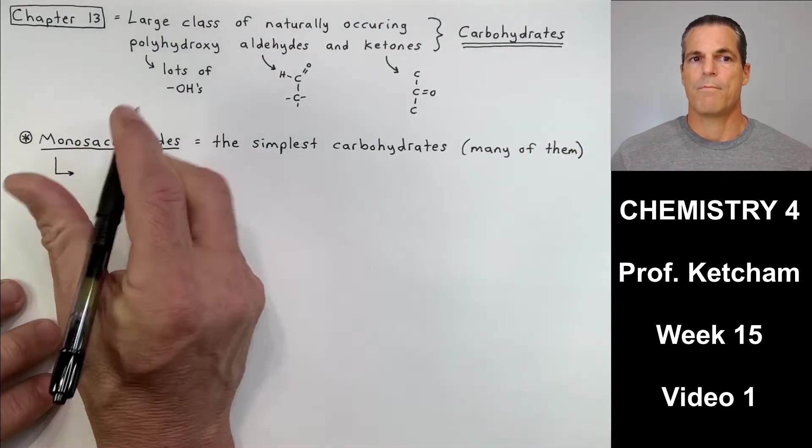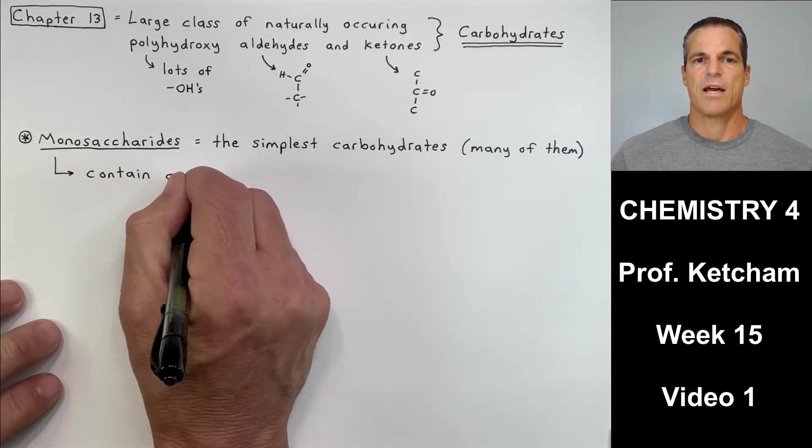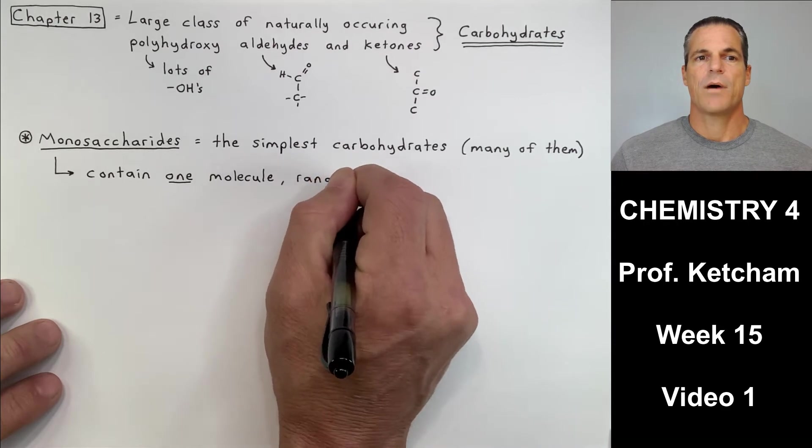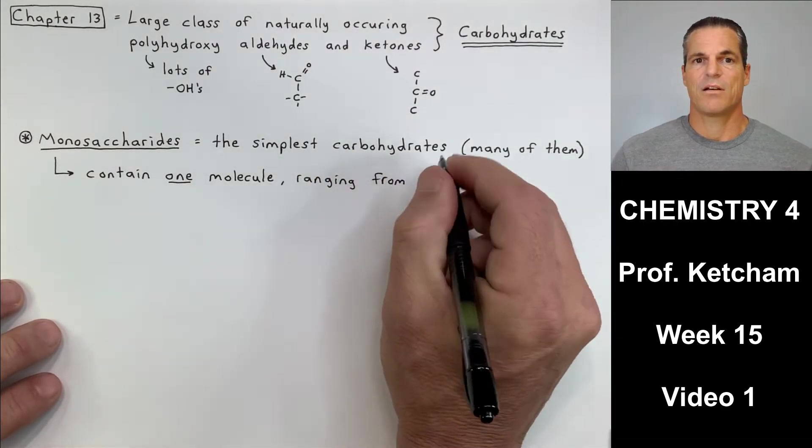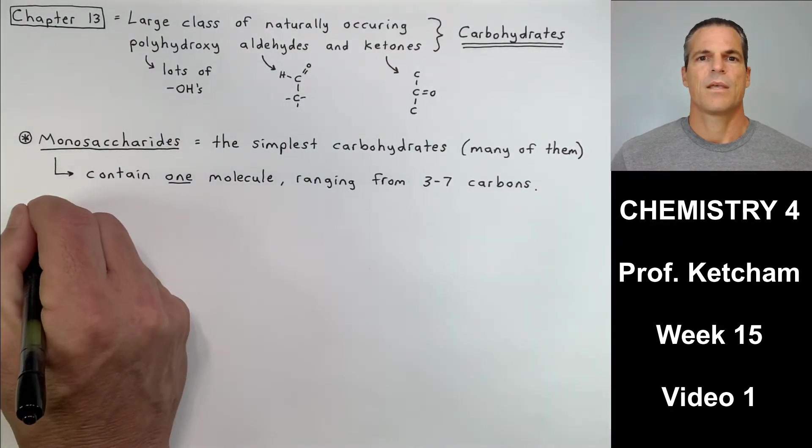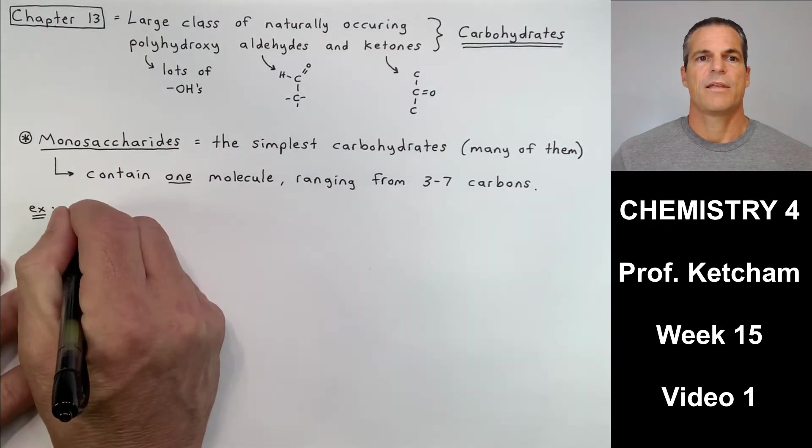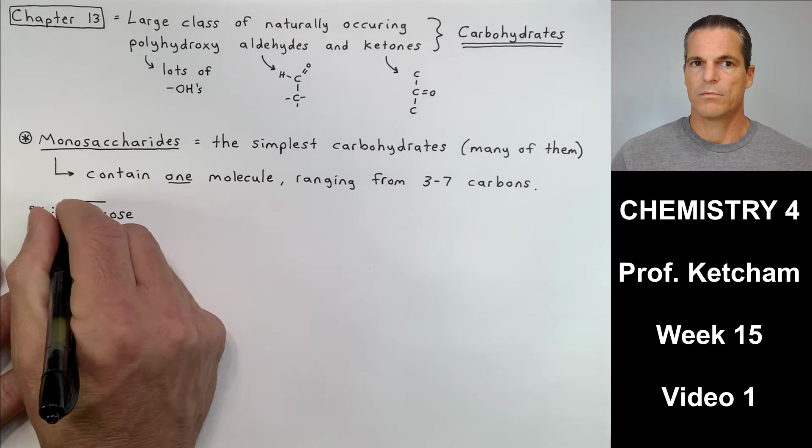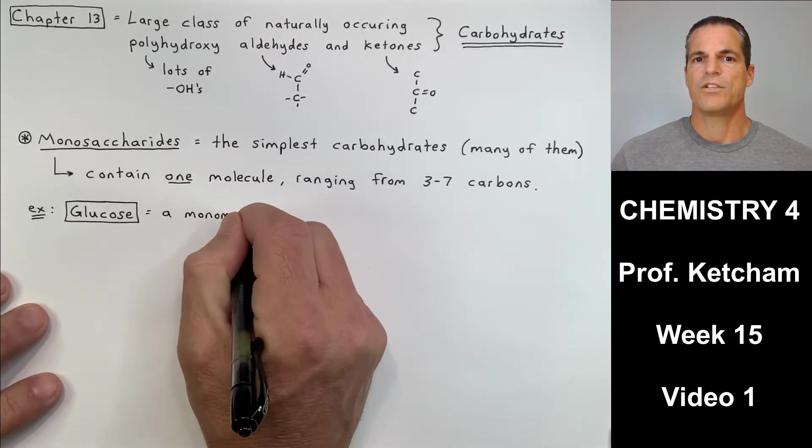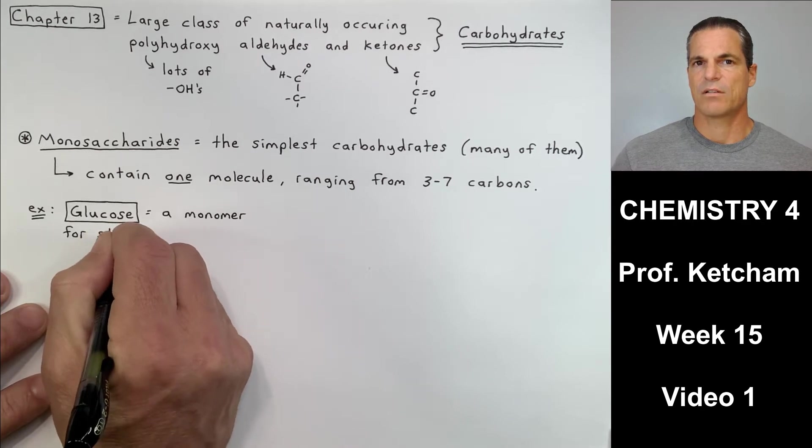Monosaccharides. Well, mono we know is one, and saccharide is our clue that this is a carbohydrate. So monosaccharides are the simplest of our carbohydrates. We'll learn, I think, four of them. There are many of them, however. They contain one molecule because it's a monosaccharide, right? It's one molecule ranging from three to seven carbons.